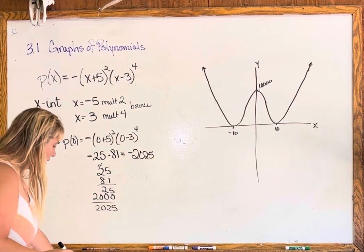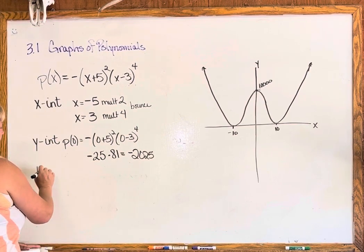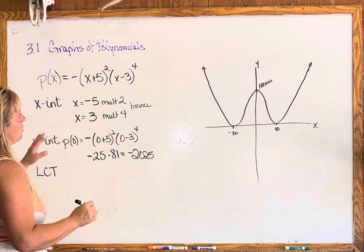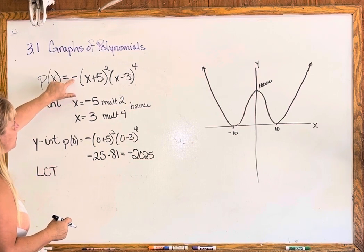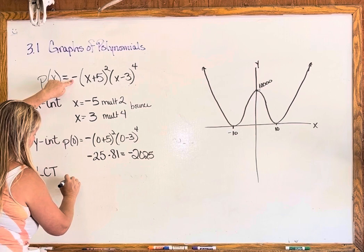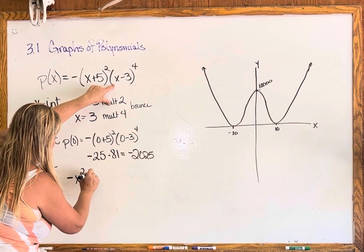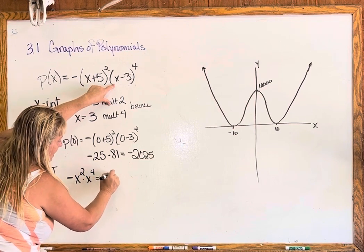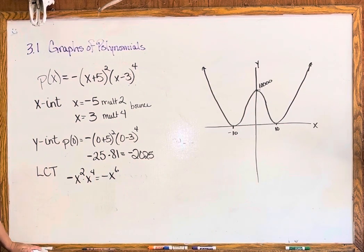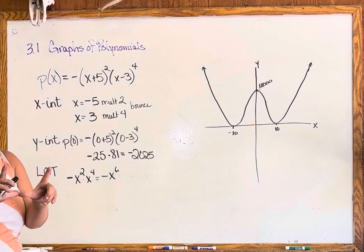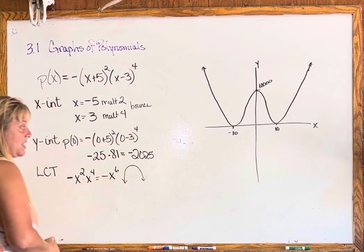Obviously we're not going to be to scale on the graph. For the leading coefficient test, we have to build it ourselves — we have a negative, then x squared, then x to the fourth, so multiplying gives us negative x to the sixth. Six is even so it looks like a parabola, but the negative flips it upside down, so our graph is going to look like an upside-down parabola with both arrows pointing down.